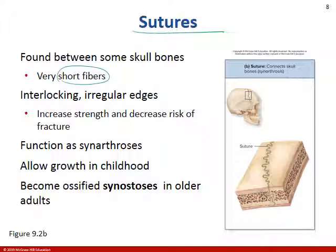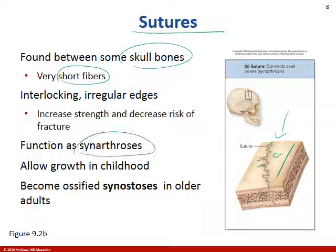Sutures are the next type of fibrous joint. Very short fibers attach two skull bones together, forming irregular edges — you shouldn't see a suture that's a straight line. These are also synarthrotic; they're immovable. Now remember in childhood they're allowed to grow a little bit. From childbirth, remember we talked about the fontanelles, so you won't have complete ossification until you become slightly older.